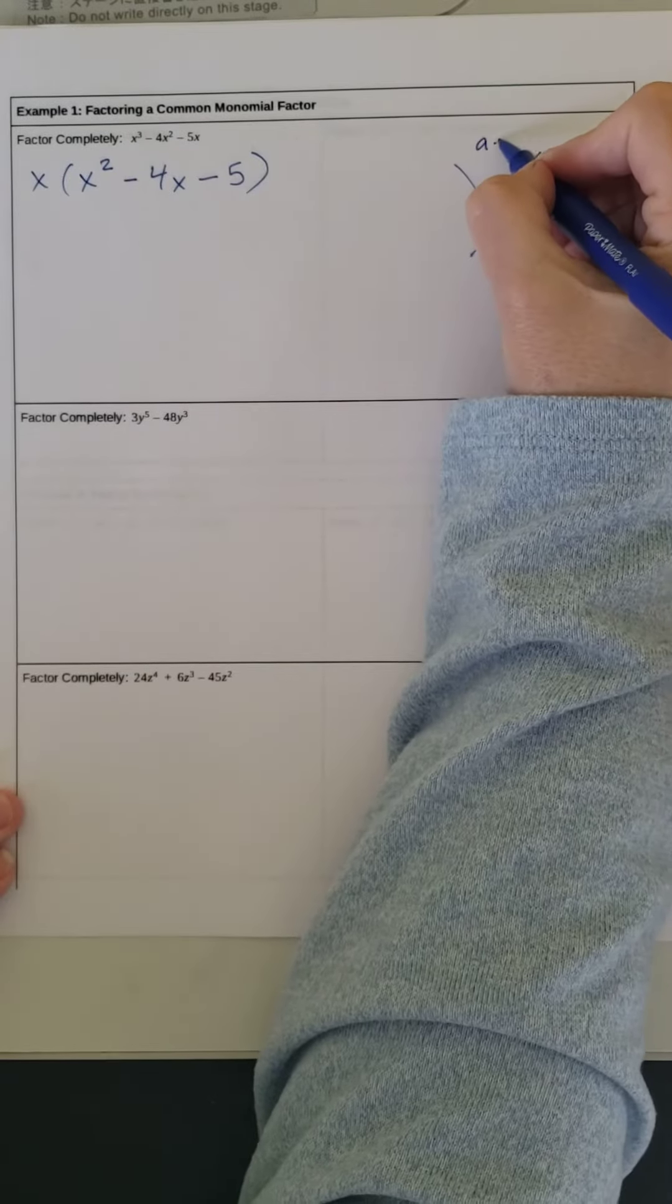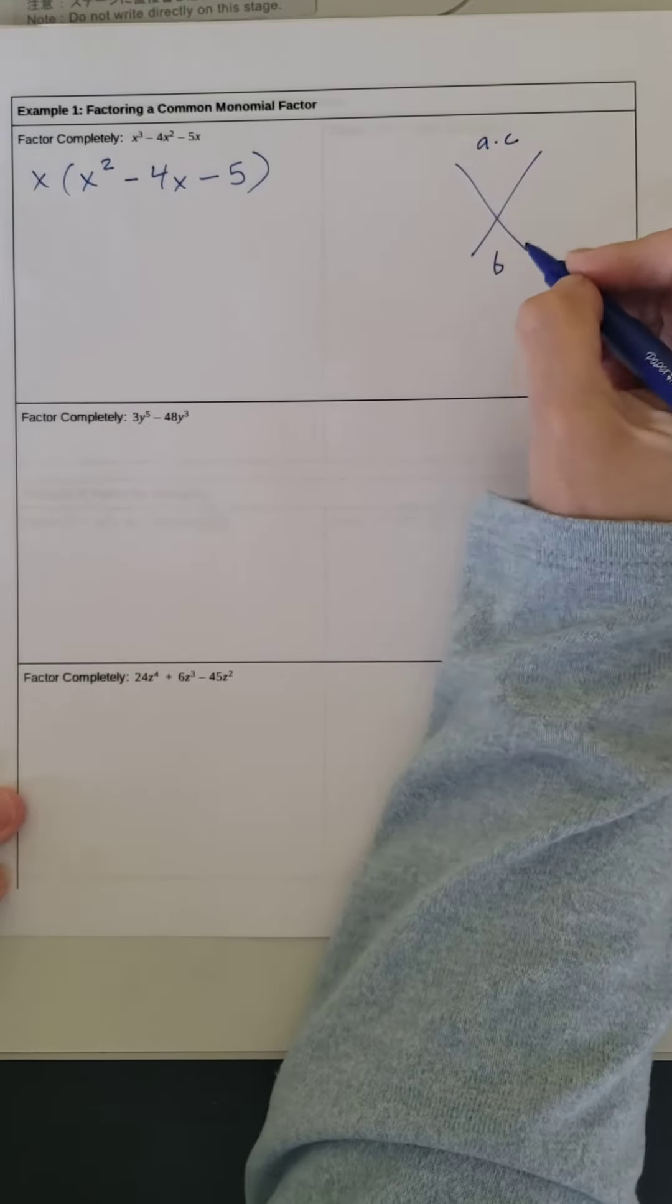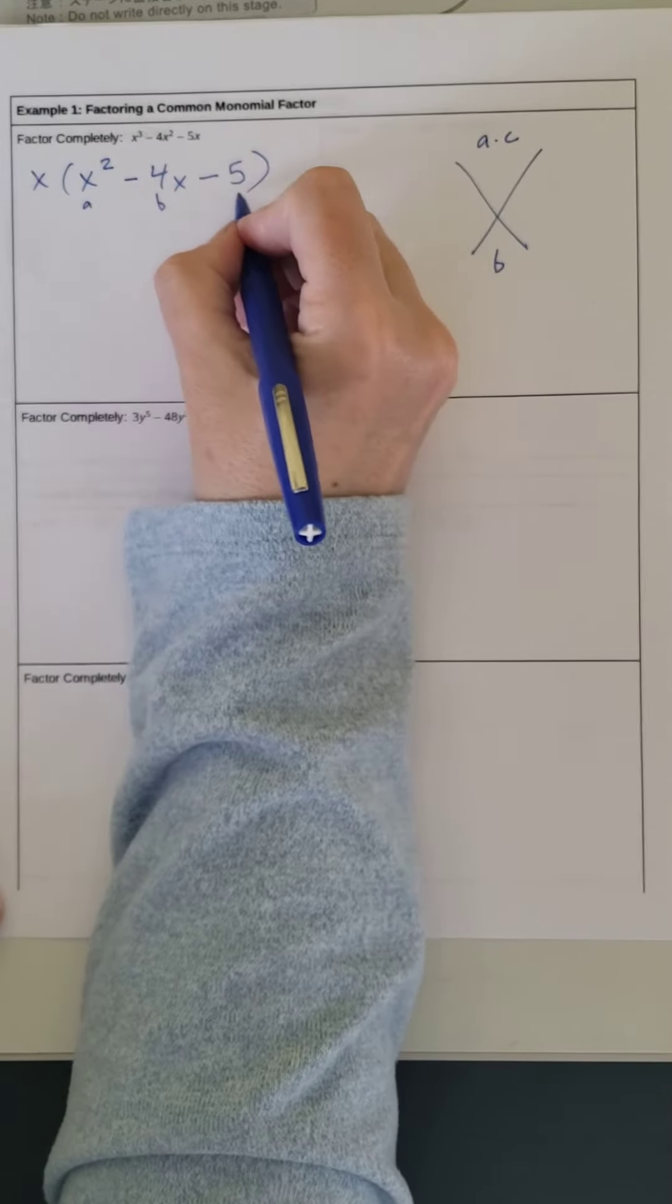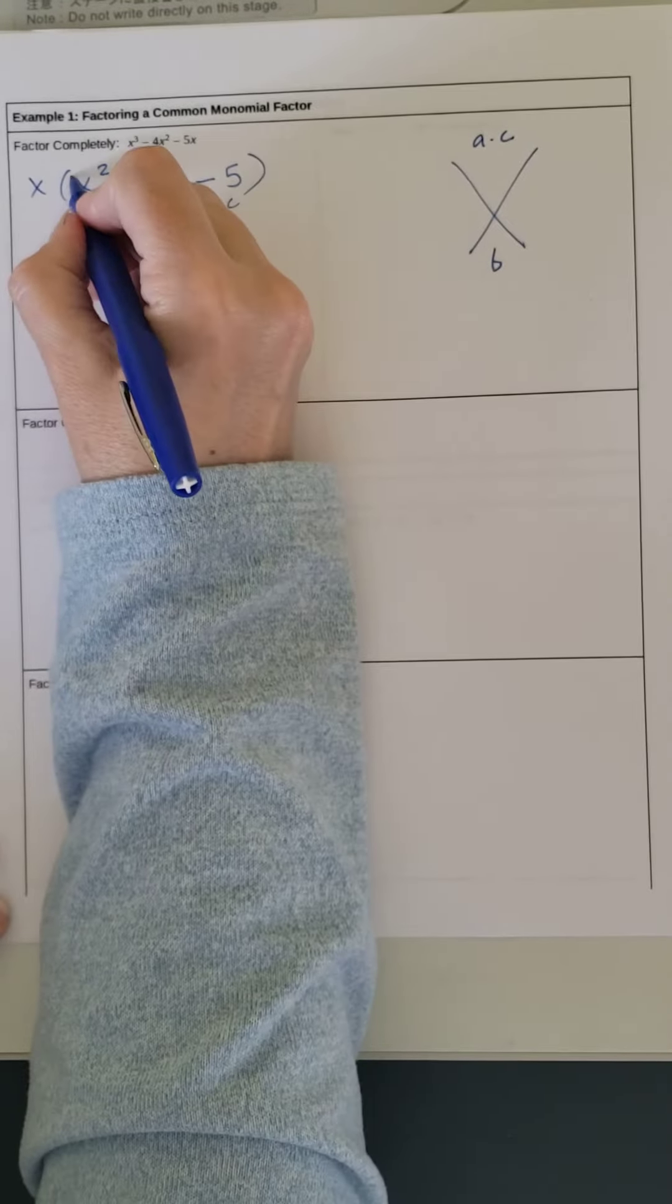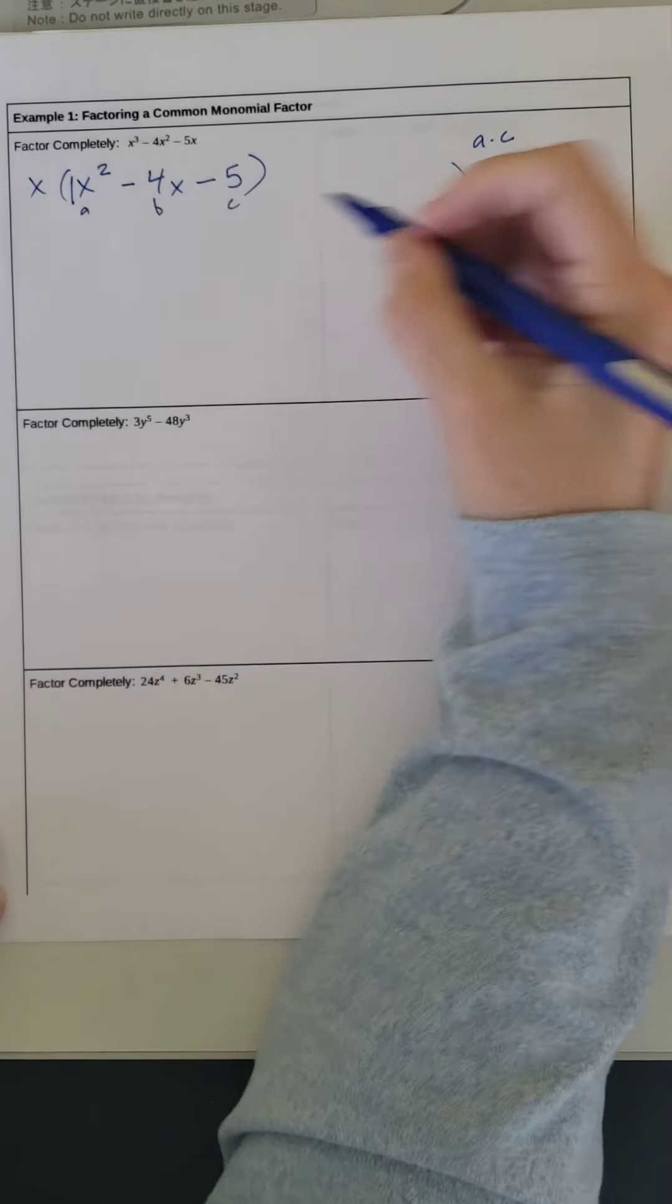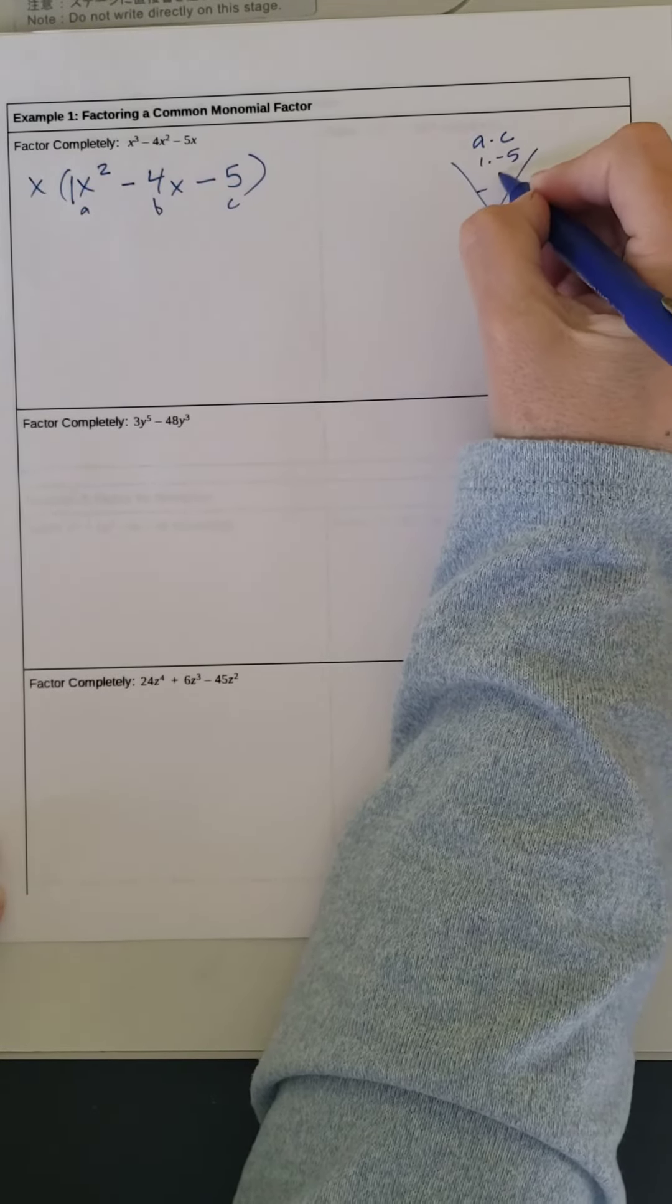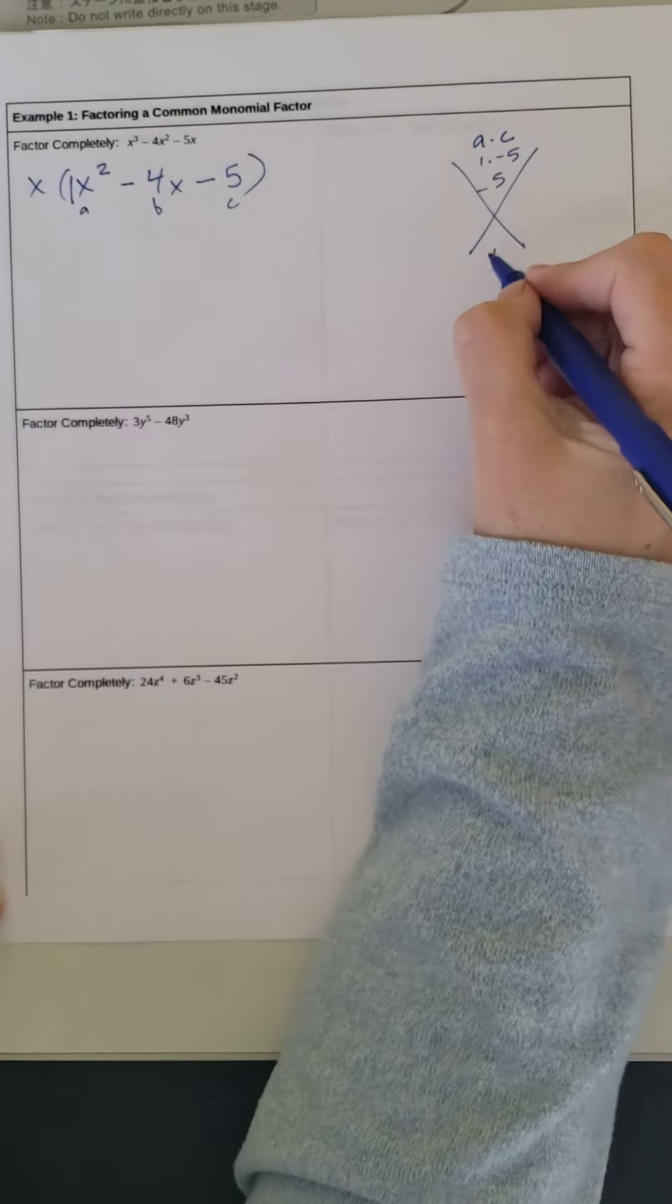So remember this is a times c up here, and b goes down here. This is our a, b, and c. There's an imaginary 1 here. So we have 1 times negative 5, which gives us negative 5, and our b value is negative 4.